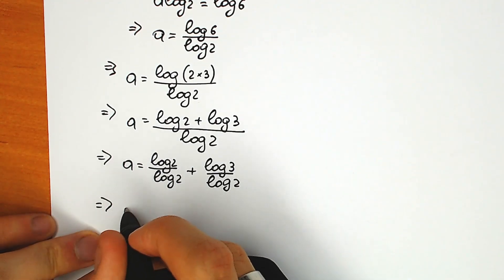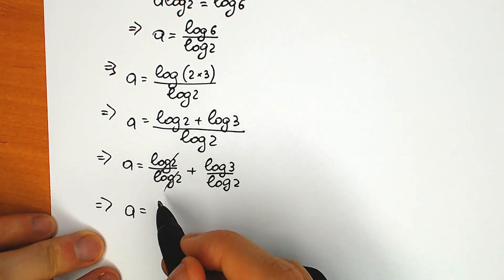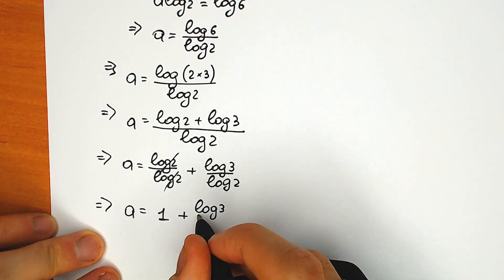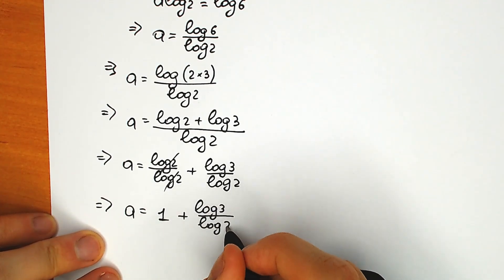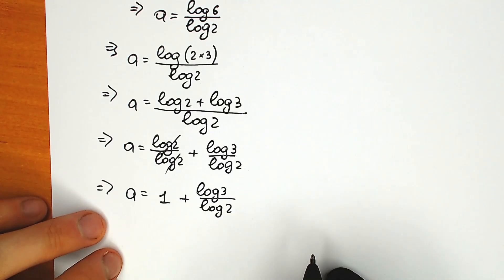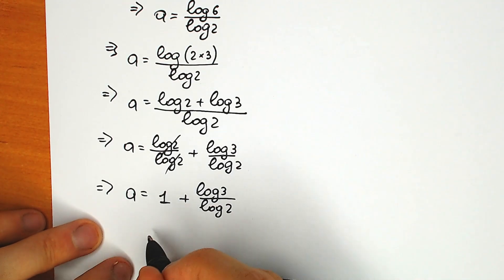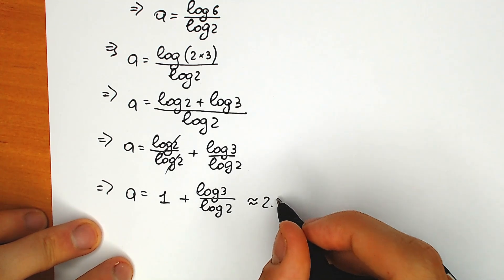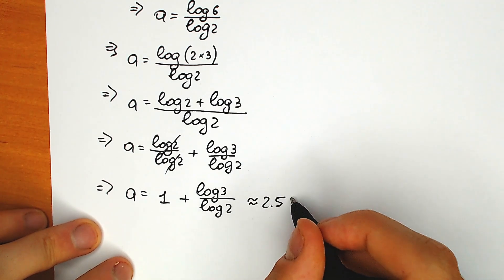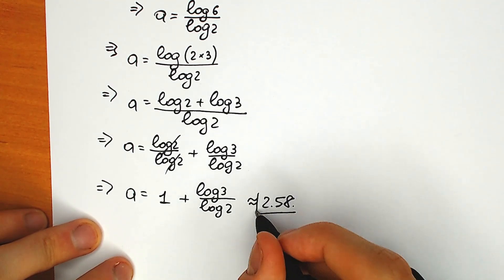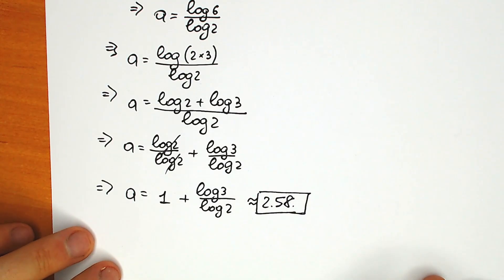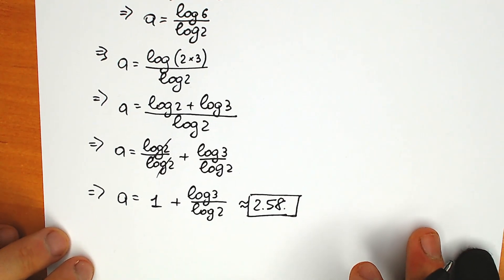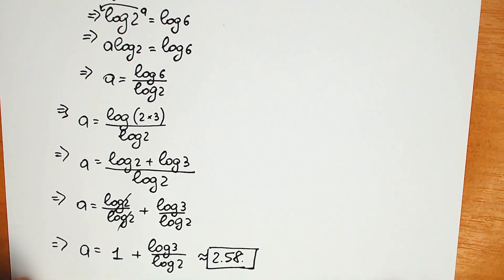So we have a equal to 1 plus log 3 over log 2. Our answer is approximately equal to 2.58. This is our answer to this question. But before writing the final answer, I want to solve another branch, because a lot of students might be asking about a complex root.